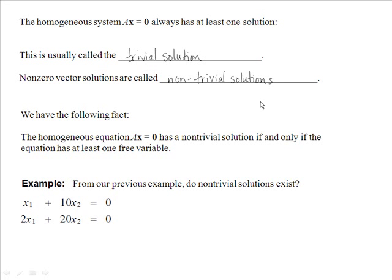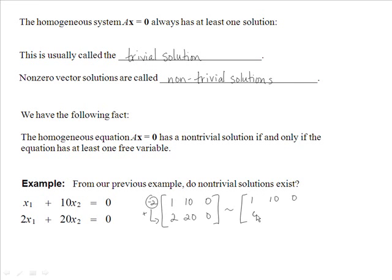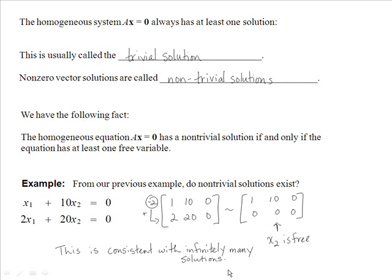Looking back at our previous example, to examine if non-trivial solutions exist, we look at the augmented matrix including our column of zeros. We row reduce it — multiply by negative 2 and add — and we get 1, 10, 0 and then a row of zeros. So we see that x2 is free, which means this is consistent with infinitely many solutions.